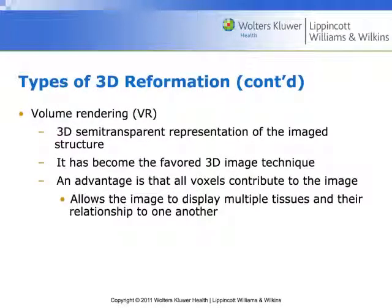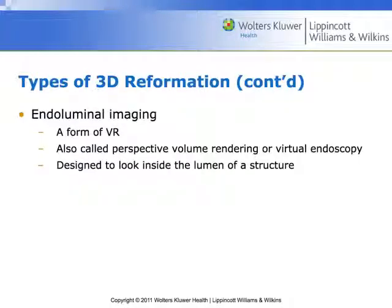Volume rendering, in contrast to surface rendering, allows us to see the entire volume of all the voxels included in the image. This allows us to display multiple tissues and their relationship to each other. With a volume rendered 3D image, we can actually go slice by slice through the 3D volume and see the relationships of structures within themselves. Endoluminal reformats are a form of virtual reality, allowing a perspective of a volume rendering — a virtual fly-through of any luminal space — such as a virtual bronchoscopy or CT virtual colonoscopy, flying through the colon or through the bronchioles.